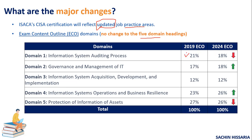However, they have changed the percentage of questions being asked in the examinations. In the current syllabus, Domain 1 consists of 21% of questions, but in the new syllabus this has been reduced to 18%. Domain 2 is currently 17% and has been slightly increased to 18%. Domain 3 remains the same. Domain 4 sees a slight increase from 23% to 26%, and Domain 5 is reduced by about 1%.